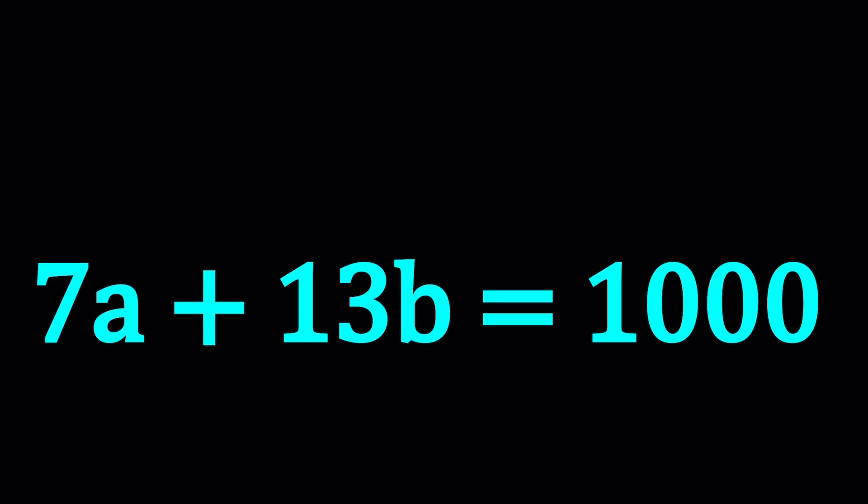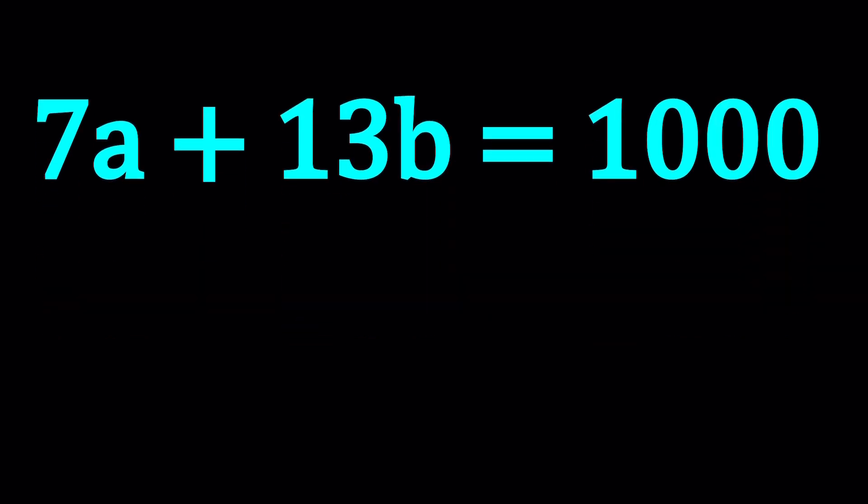This problem actually came from a word problem, but I just wanted to give you the resulting equation. We have 7A plus 13B equals 1,000, and A and B are positive integers. We're going to try to find their values. I'll be presenting two methods. The first one is going to be breaking it down, and the second method, we're going to use something cooler. Let's start with the first method.